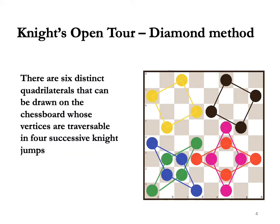There are six distinct quadrilaterals that can be drawn on the chessboard whose vertices are traversable in four successive knight jumps. Two of them are congruent squares and the others are two pairs of congruent rhombuses. These are all drawn on the diagram. Four of these shapes can be drawn in a single quarter of the chessboard. We will use these four quadrilaterals — the black and the yellow squares and the green and the blue rhombuses — to construct the knight's tour.